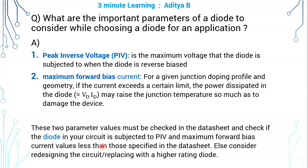If your diode is experiencing a reverse bias voltage greater than the PIV value in the datasheet, or a forward bias current greater than the rated value in the datasheet, then your diode might be permanently damaged.